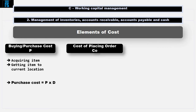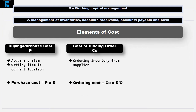The cost of placing an order, C-O, includes all of the costs incurred in ordering inventory from a supplier. Though not exhaustive, these will include stationery, computer processing costs, postage costs, etc. The total annual ordering costs will be C-O multiplied by the number of orders placed. The number of orders placed will be D divided by Q, where Q is the quantity ordered each time.